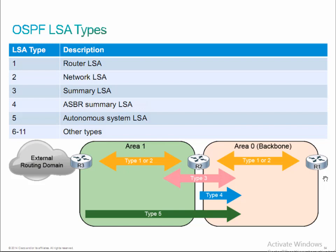We do have a type 6 LSA used for multicast. I've actually never seen a type 6 LSA in production — I've seen it in lab environments, but it's not very common. You're not going to see type 6 too often and certainly not going to be tested on it. Type 7 you'll definitely see. When we get into our discussion of special area types, the type 7 will make more sense.